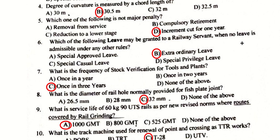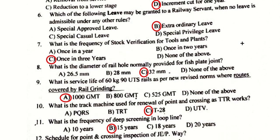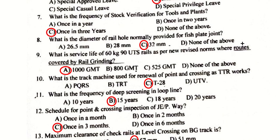The frequency of stock verification for tools and plants is once in three years. The diameter of the rail hole normally provided for the fish-bolted joint is 32 mm. The service life of 60 kg 90 UTS rail as per the new revised norms where routes are covered by rail grinding is 1000 GMT.